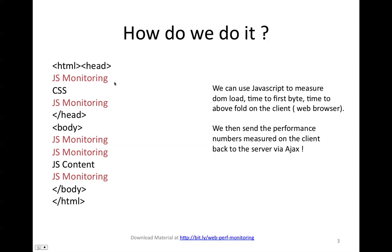You can instrument counters on your website page, which typically looks like this. You have some head section with some CSS, a body section with some content, and some JavaScript content at the very end of your body. You can add counters — JS monitoring here stands for some counting mechanism that measures how much time it takes for your JavaScript content to be downloaded, parsed, and executed. You can have counters before and after your JavaScript content, before and after your CSS content, and you can use all of those counters along with DOM load times and the time to first byte, using the navigation spec.